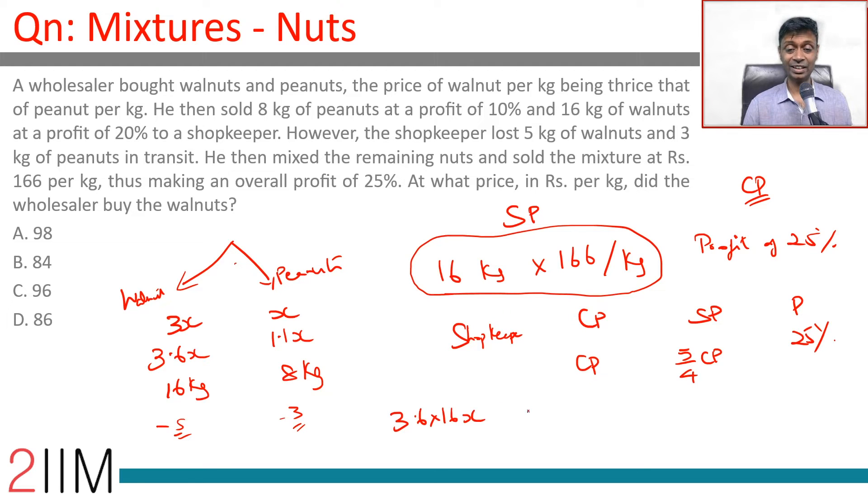3.6x into 16 plus 1.1 into 8 into x, this whole thing into 5 by 4 is 16 into 166.